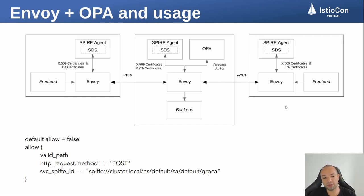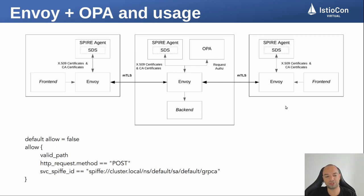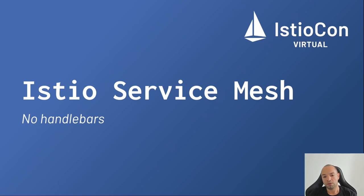After you have this authentication through mTLS, you can authorize your workload to access resources or not. In this example you can use OPA with a policy description language to validate this information. The default will be that everything is denied in the allow path, and you can specify that everything coming as a POST method from a specific SPIFFE ID — in this case cluster.local as a trust domain, the default namespace, with the default service account — is allowed to authenticate.